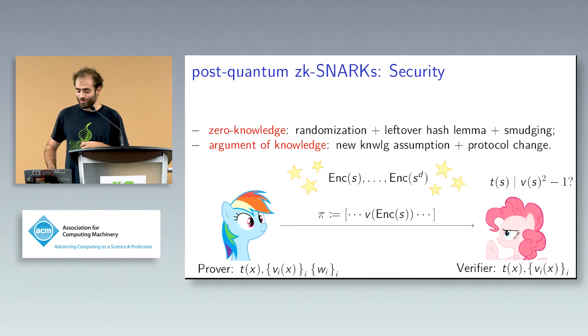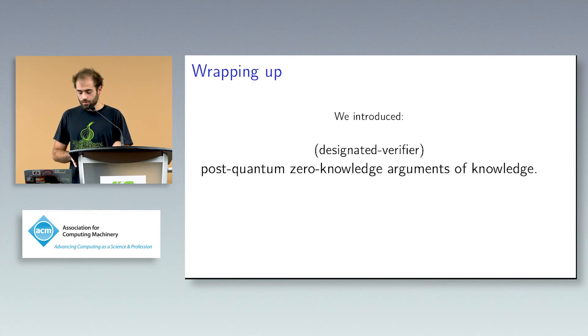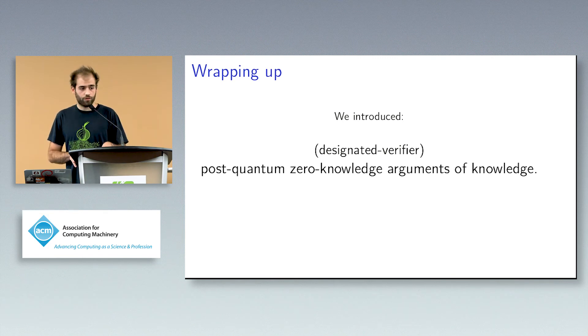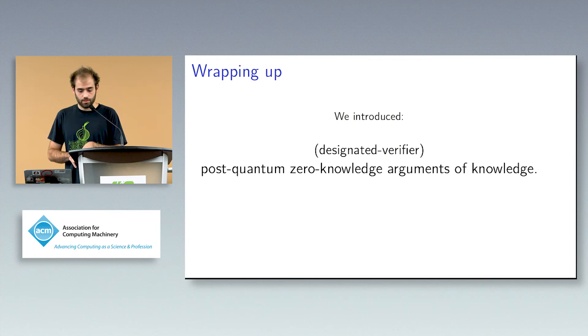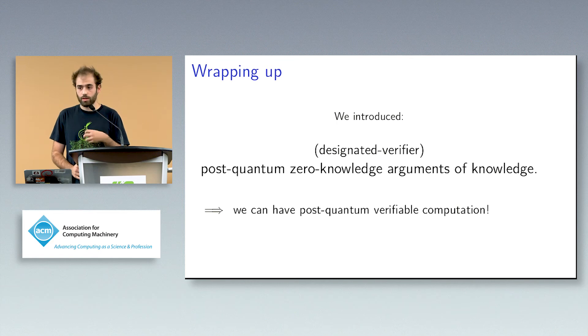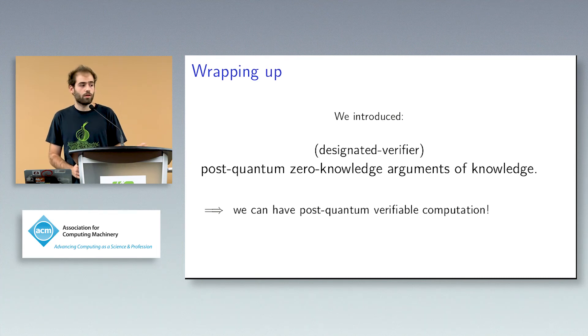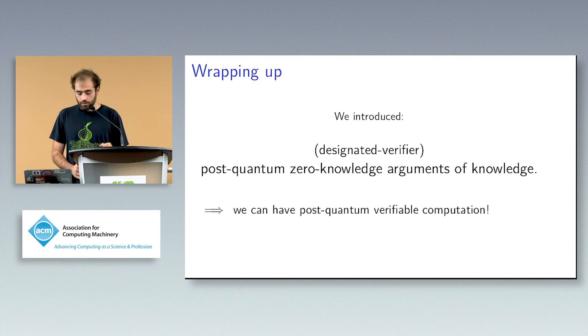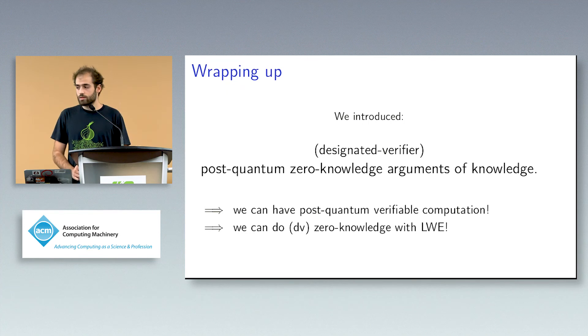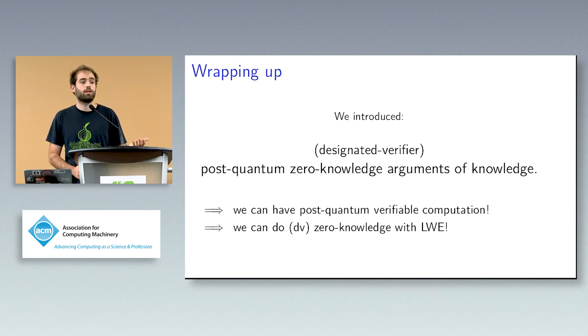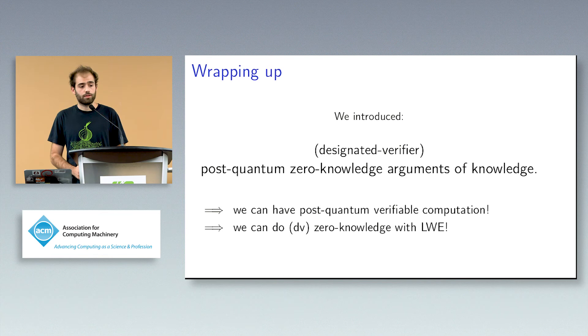I hope this was sort of understandable. So repeating once again, what we did was we introduced designated verifier zero knowledge SNARKs using lattice assumptions. And why I believe this is important, for example, in practice is that we can have post-quantum verifiable computation. So these days we have all these FHE papers, but we have really no ways, no way of sort of attesting that the computation was done correctly. And hopefully this will help. And why is this useful in theory? Well, at least at the time we were working on this, there was literally no paper or it was still an open problem to provide zero knowledge on lattices or provide arguments of knowledge on lattices. And we thought this was a sort of a way in which we could provide both.